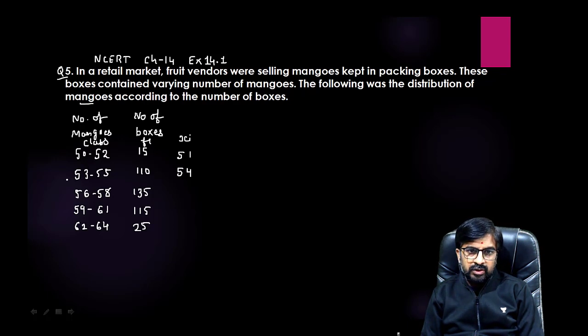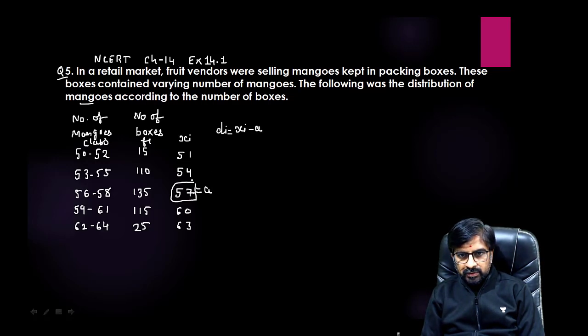You can understand by the term itself which method will be easier. Let me find out first the class mark, that is midpoint. Here easily 51, 54, 57, 60, and 63. The data are not continuous, you can see, but for mean no need of making it continuous. Only in median and mode you need to make data continuous. Now you can see if you multiply these, the numbers are very big. To reduce that, we need to suppose any one term as a and find out di. di equals xi minus a. If you subtract, here 57 minus 57 is 0, 54 minus 57 is -3, 51 minus 57 is -6, and then +3 and +6.